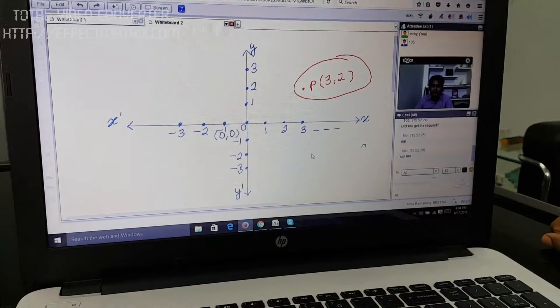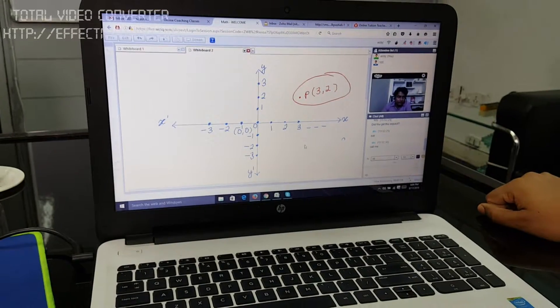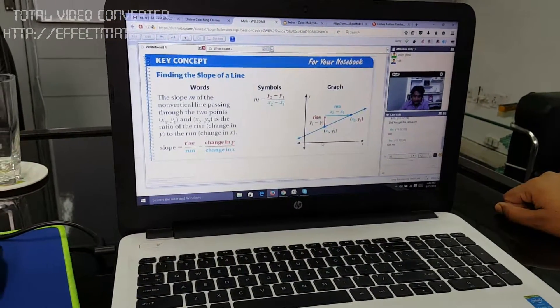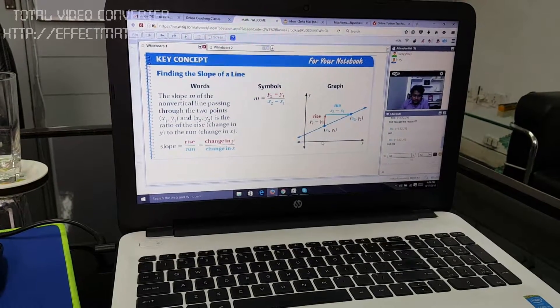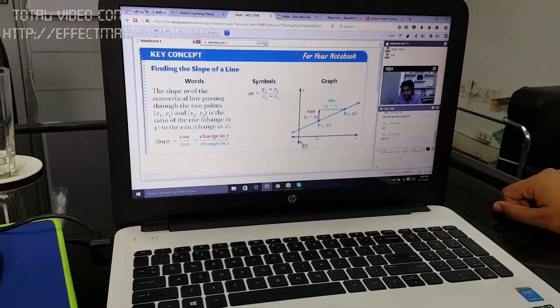Or you can also call it as the coordinate of a certain part. Let's now come to the previous whiteboard where we were talking about the slope of the straight line. We have just extracted a few parts of the coordinate system. It's just the first quadrant.